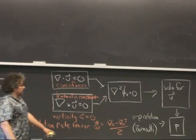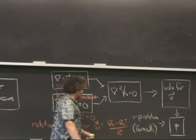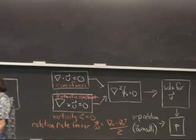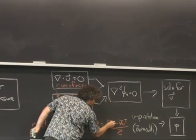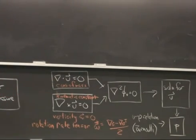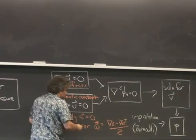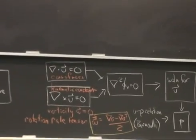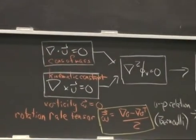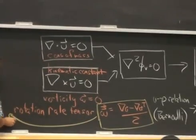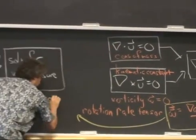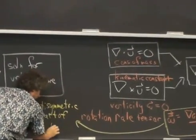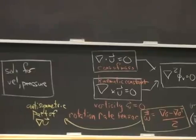This rotation rate tensor is basically the difference between the gradient of the velocity and the transpose of the gradient of the velocity. When I write this expression that says the rotation rate tensor is equal to the difference of the velocity gradient tensor grad u and its transpose, what I'm really doing is I'm taking the anti-symmetric part of the gradient of u.